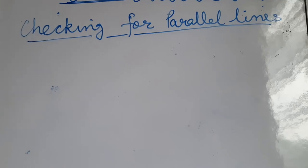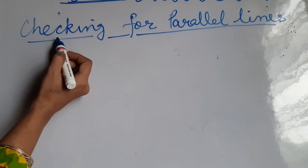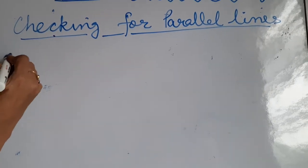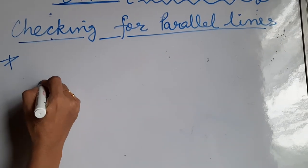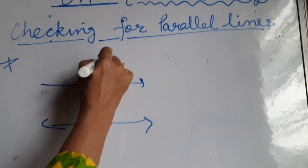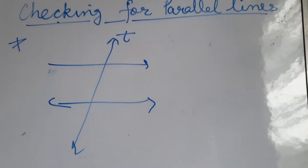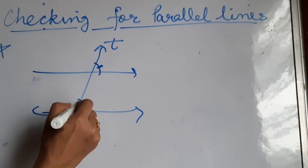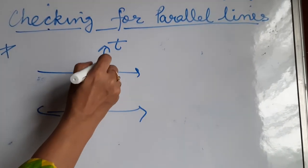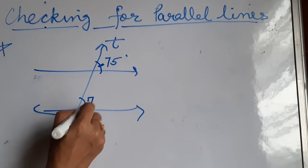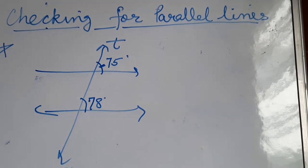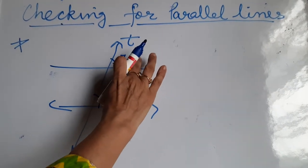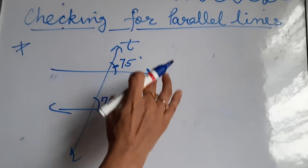The next topic is checking for parallel lines. When a transversal cuts two lines, we check three conditions. First: if the pair of corresponding angles are equal, then the lines are parallel. For example, if both corresponding angles measure 75 degrees, lines are parallel. But if one is 75 and the other is 78 or 80, the corresponding angles are not equal and the lines are not parallel.